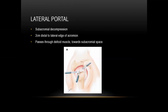The lateral portal is mainly for subacromial decompression. It is located 2 cm distal to the lateral edge of the acromion. As taught, we divide the acromion into three parts and use the anterior third. This portal passes through the deltoid muscle toward the subacromial space.